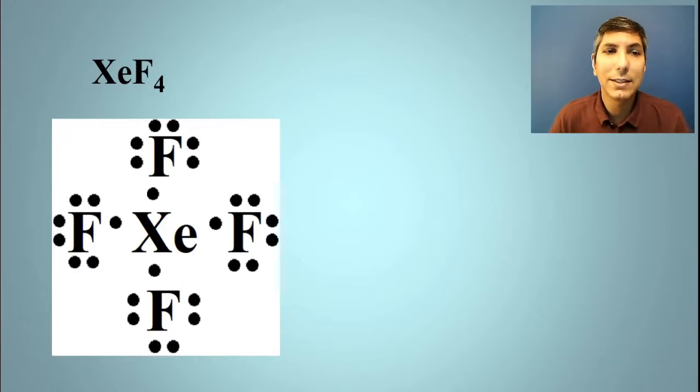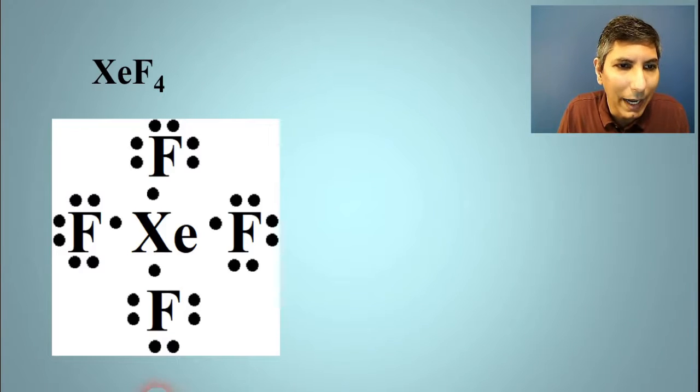Next, we have the xenon atom. How many valence electrons does xenon have? It has eight. As you look at it on the periodic table, it's in group 18. So I'm going to put the eight dots around here as well as I can: one, two, three, and four.